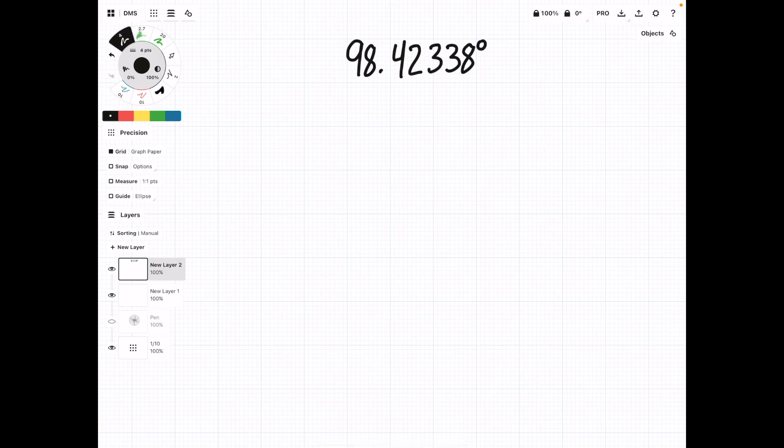Let's try another one. This time, we have 98.42338 degrees. And we want to write this in degrees, minutes, and seconds. So, what we're going to do is take this fraction and multiply it by 60 to give us our minutes. 0.42338 times 60. This equals 25.4028 minutes.